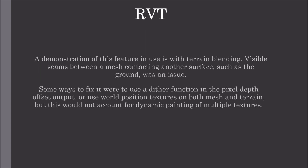A demonstration of this feature in use is with terrain blending. Visible seams between a mesh contacting another surface, such as the ground, was an issue. Some ways to fix it were to use a dither function in the pixel depth offset output, or use world position textures on both mesh and terrain, but this would not account for dynamic painting of multiple textures.